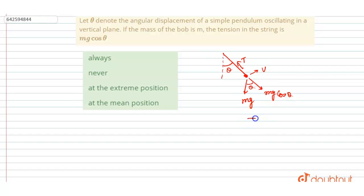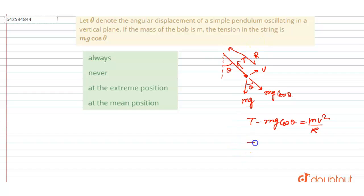The net force along the string gives us: T minus mg cos theta equals mv squared by r. So T equals mg cos theta plus mv squared by r, where r is the length of the string.